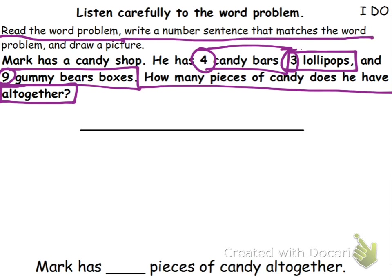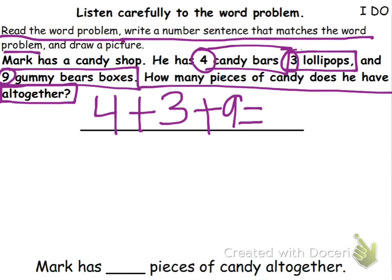We know that he has four candy bars plus three lollipops plus nine gummy bear boxes. But this is our mystery — we don't really know this part yet. We don't know how many he has altogether.